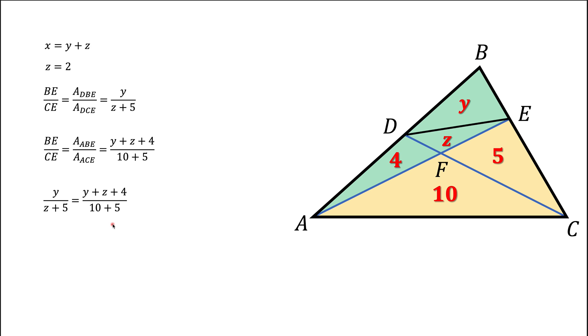Since we know what Z is, we substitute Z there. We get an equation like this. Now we simply multiply both parts of this equation by 7 and by 15.